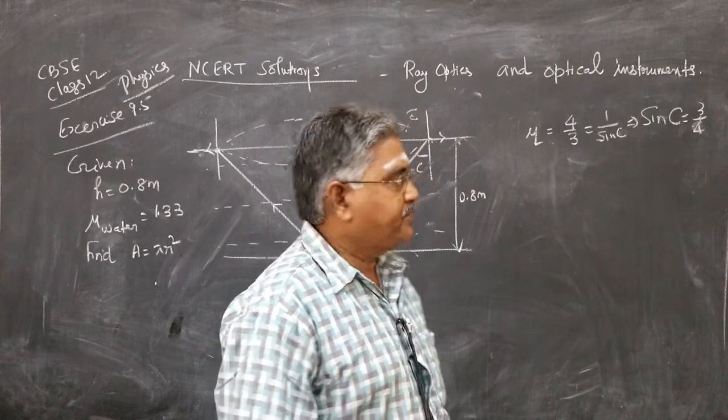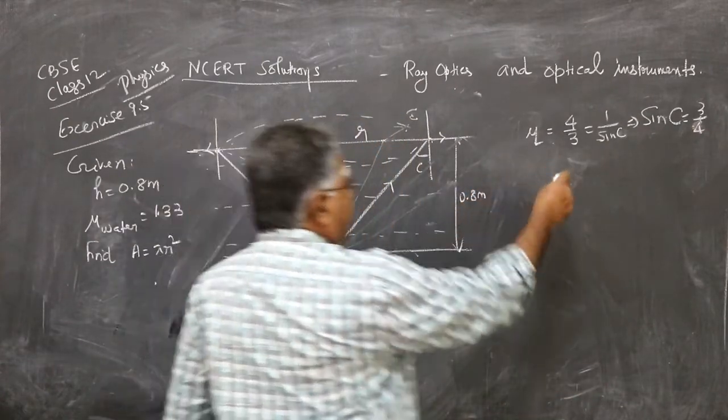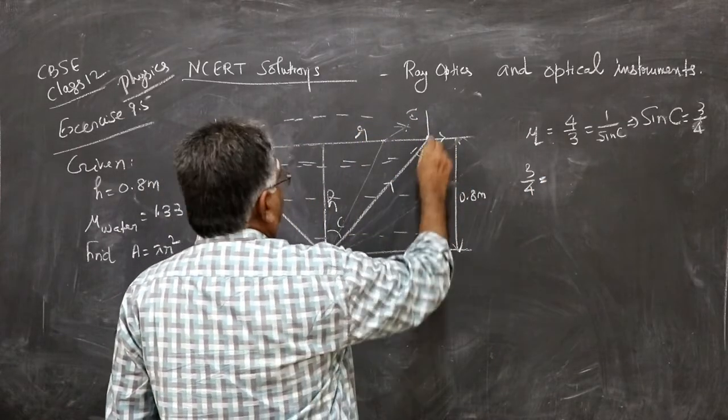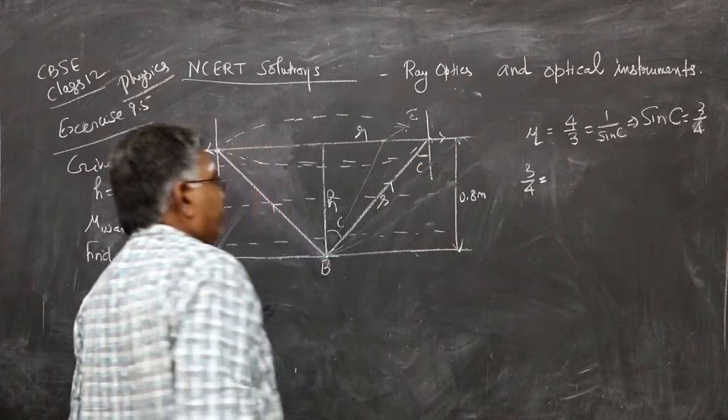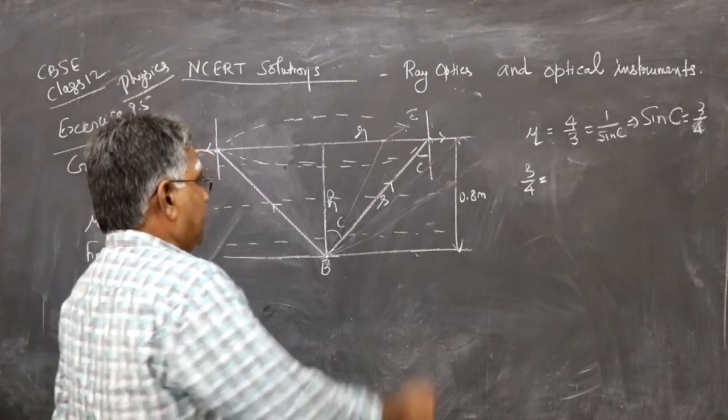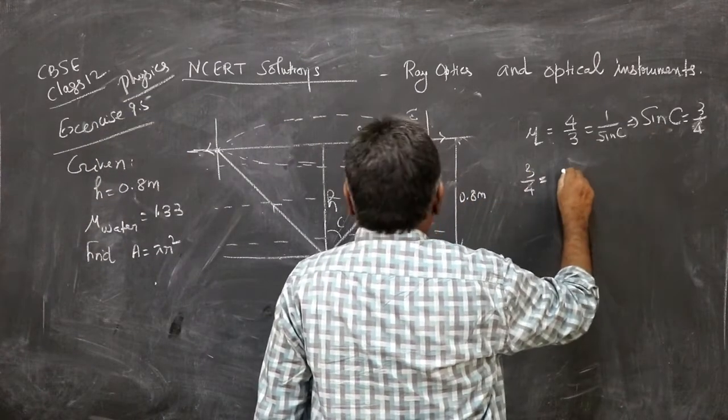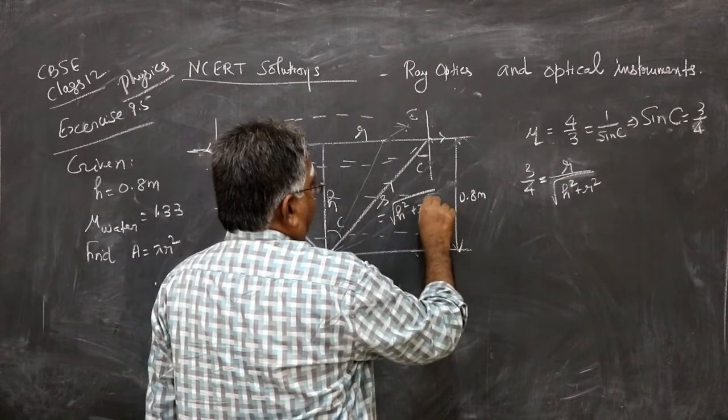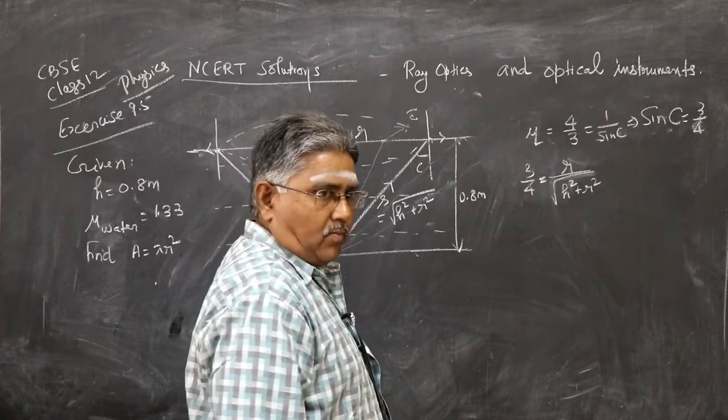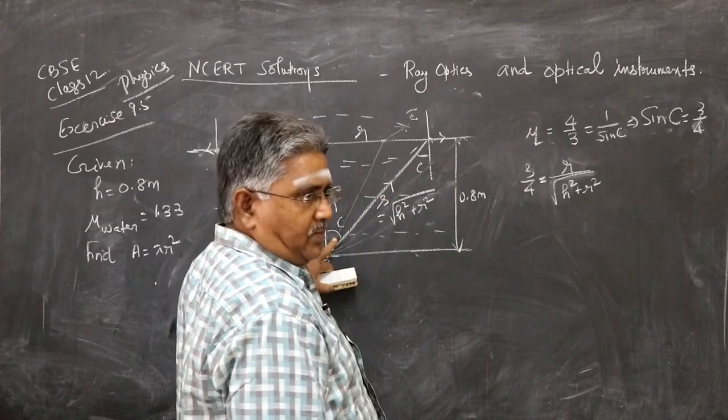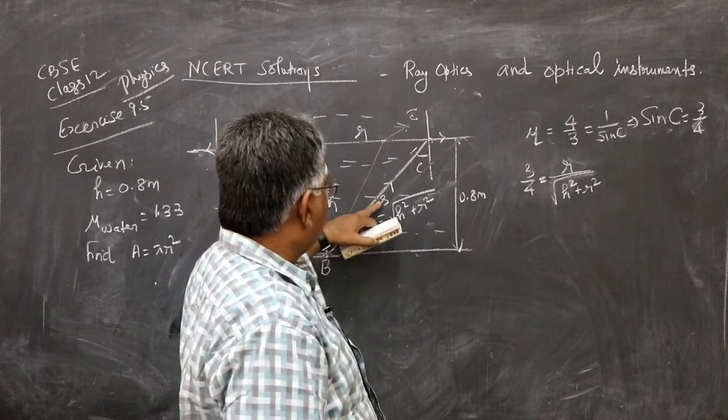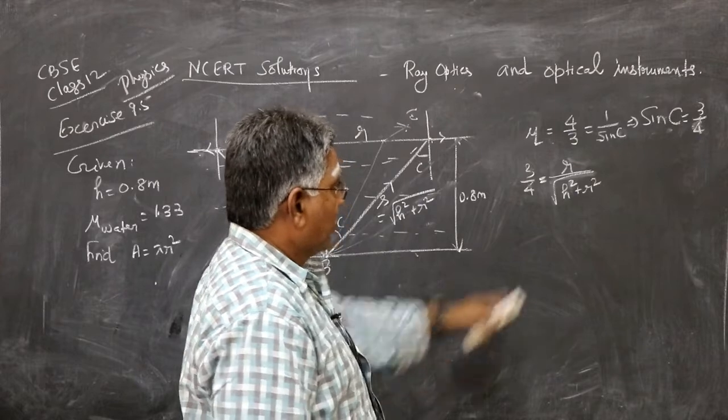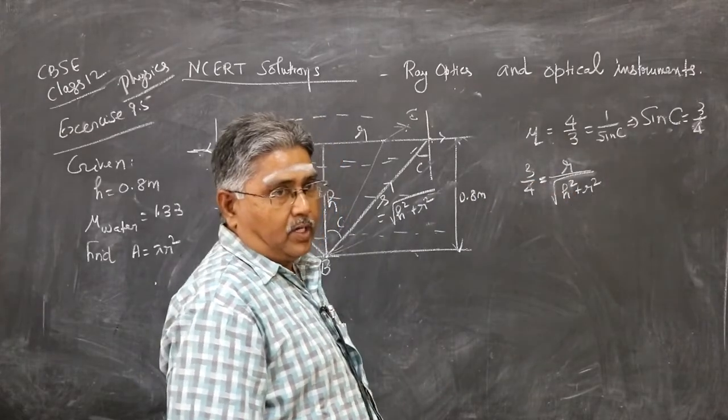Also, sine C is R by S. So sine C equals R by S, where S is square root of H squared plus R squared. This is angle C. S is also C, alternate angle. Therefore, sine C equals R by S, where S is root of R squared plus H squared.